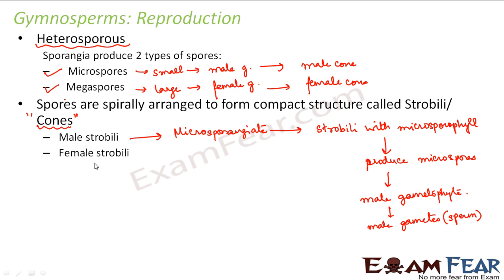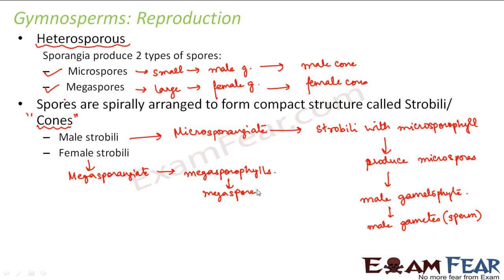In case of the female strobili, it contains the megasporangia, which consist of megasporophylls. These megasporophylls produce the megaspores, which germinate to form the female gametophyte. The female gametophyte then produces the female gametes. Note that not all megaspores form the female gametophyte — only one of these megaspores will do so.